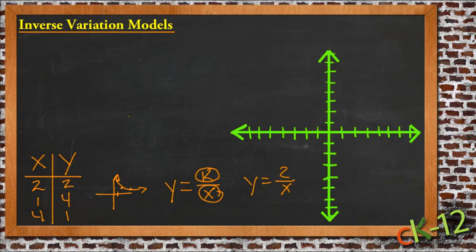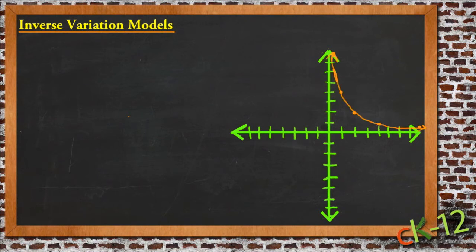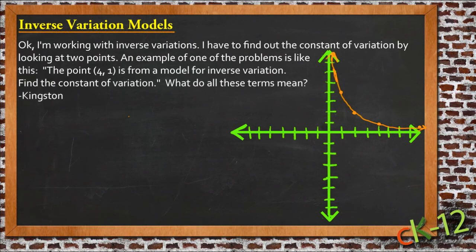We had a student call in a question that was similar to this, and I'm going to use it as sort of an example here. His name was Kingston, and Kingston says that he's working with inverse variations, and he needs to find a constant of variation by looking at two points. An example of one of the problems is like this. The point is (4, 1), and it's from a model for inverse variation.